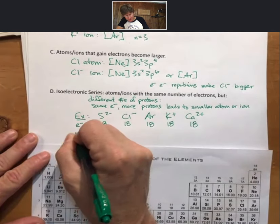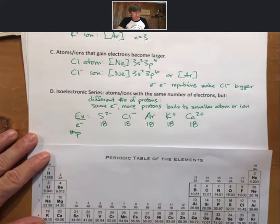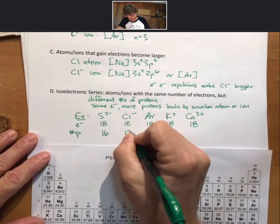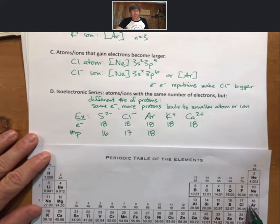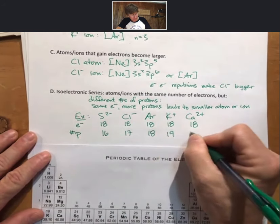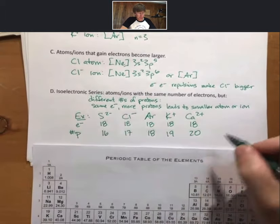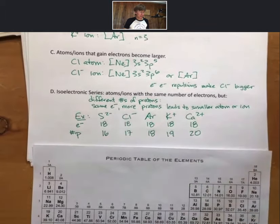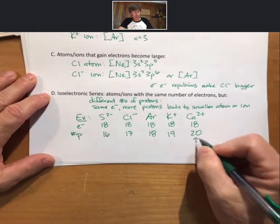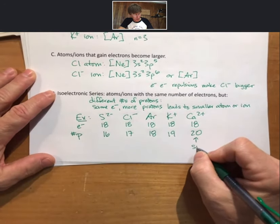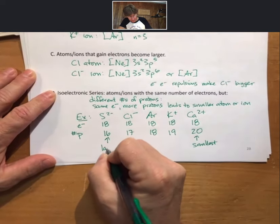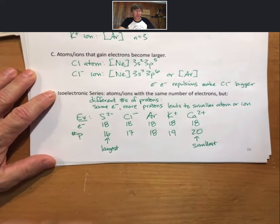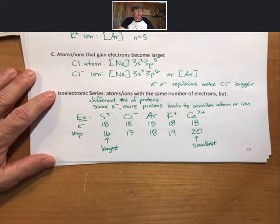For number of protons, well, these are just the atomic numbers or the numbers on top. So, among all of these, we would say, same number of electrons, most protons, smallest, largest. That is an isoelectronic series.